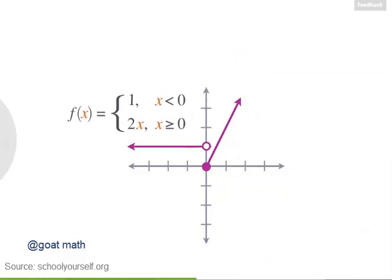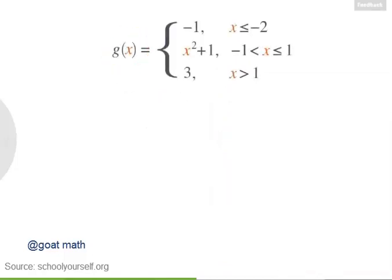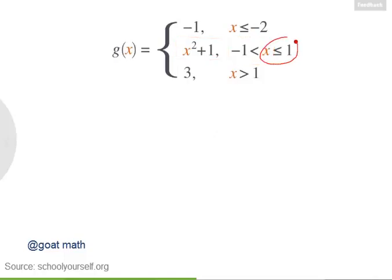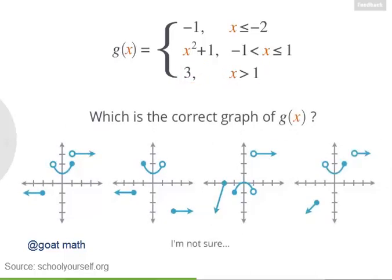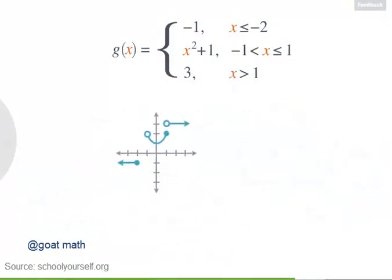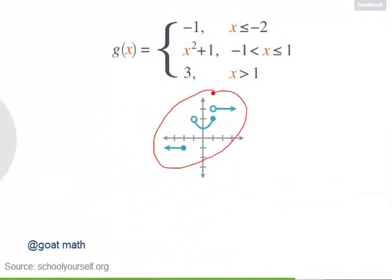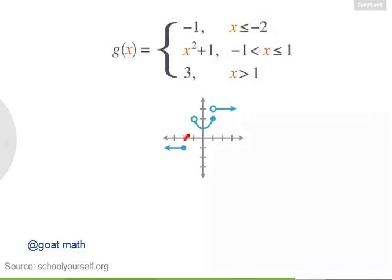Let's look at a slightly more complicated piecewise function, which we'll call g of x. In this example, g of x has three pieces. g of x equals minus 1 for all x less than or equal to minus 2. g of x equals x squared plus 1 when x is greater than minus 1 but less than or equal to 1. And g of x equals 3 for all x greater than 1. Which of these graphs is the correct graph of g of x? This first graph correctly plots all three pieces. Notice that g of x is not defined when x is between minus 2 and minus 1, so these inputs are not part of this function's domain.